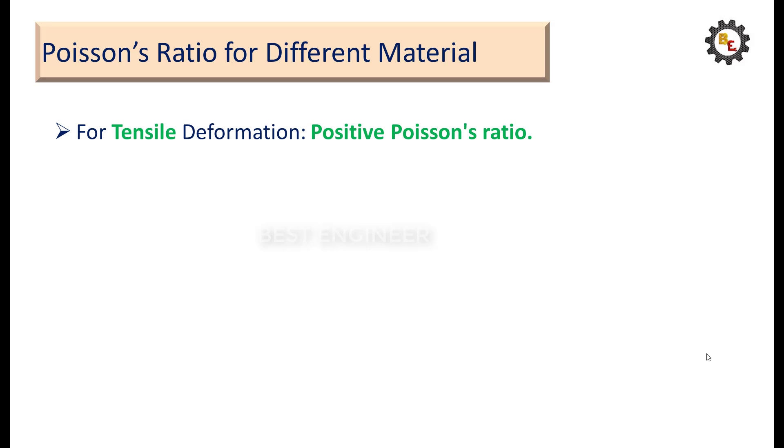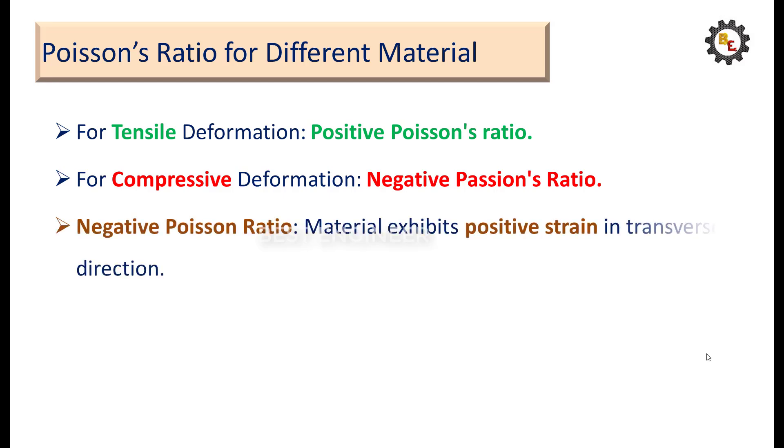Poisson's Ratio for different materials: For tensile deformation, materials will show a positive Poisson's Ratio. For compressive deformation, materials will offer a negative Poisson's Ratio. For a negative Poisson's Ratio, the material will show a positive strain in the transverse direction. The Poisson Ratio for most materials, the value will be between 0 to 0.5.